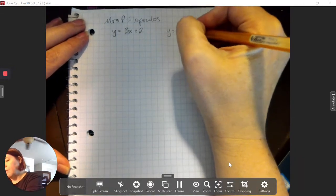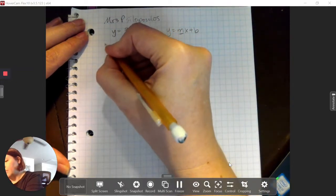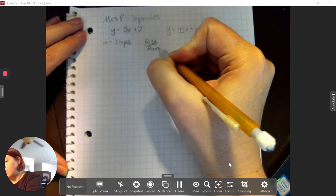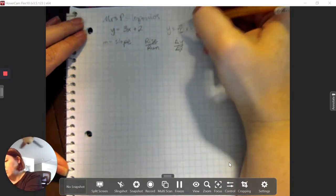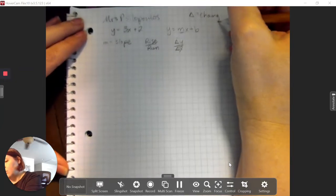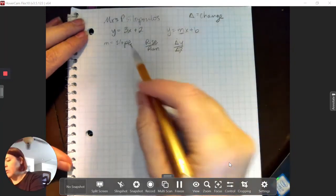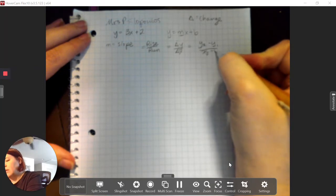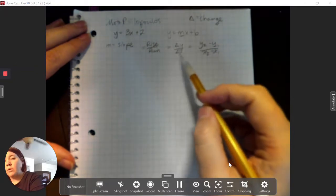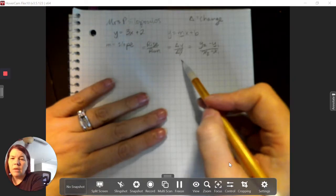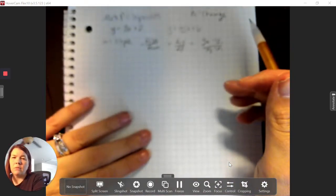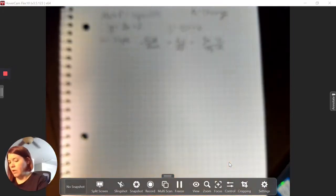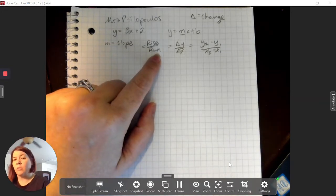So what we want to do is we need to remember y equals mx plus b. So m represents slope. And slope is rise over run, change in y over change in x. And this delta symbol means change. So it's important that we understand all the things I'm using as symbols. Slope, rise over run, change in y over change in x.